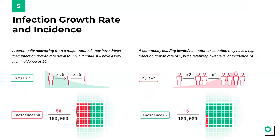It is important to look at both incidence and infection growth rate when examining a given community. Take a look at the example on the left: a community recovering from a major outbreak may have driven their infection growth rate, also known as RT, down to 0.5, but could still have a very high incidence of 50. Many people in the community have tested positive, but less so than in prior weeks, meaning that their incidence level is decreasing. Because RT is less than 1, their incidence level should continue to drop. For the example on the right-hand side, a community heading towards an outbreak situation may have a high infection growth rate of 2, but a currently low incidence of 5. We can assume that the incidence of COVID cases in this community will grow in the coming days because of the high infection growth rate of 2, which indicates that each person in the community will, on average, infect 2 additional people.